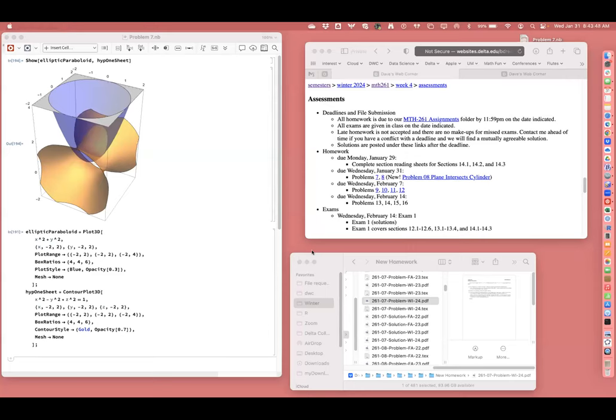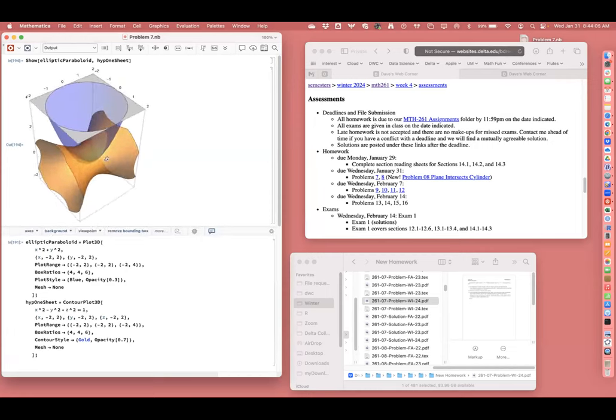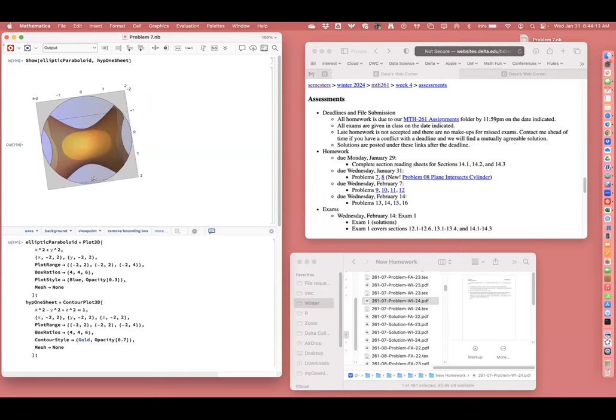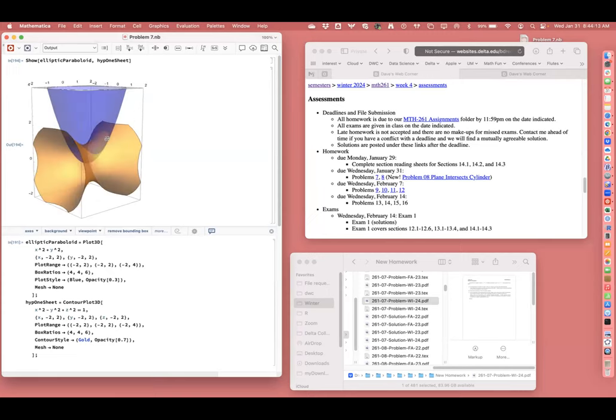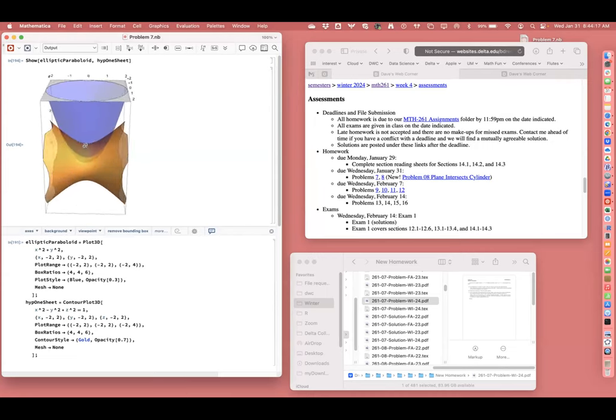Let's take a look at an intersection of an elliptic paraboloid and a hyperboloid of one sheet. I have these surfaces preset here in Mathematica - the elliptic paraboloid in blue, the hyperboloid of one sheet in gold. You can see the intersection curve, some kind of oval type thing, maybe the border of something shaped like a potato chip.